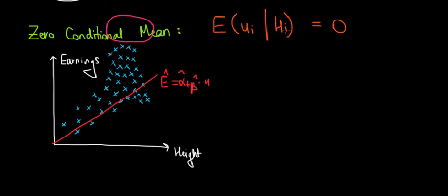Why is that? Well because for a certain height we will have different predicted values of earnings. So for a certain height of an individual, let's call that 176 centimeters, we will have different earnings.